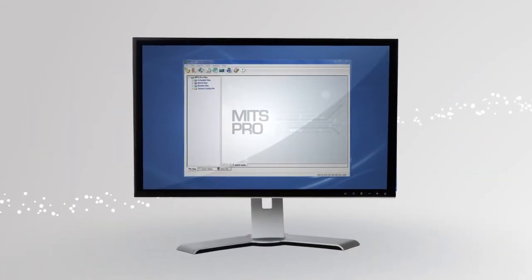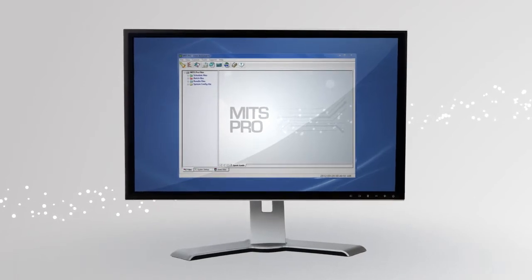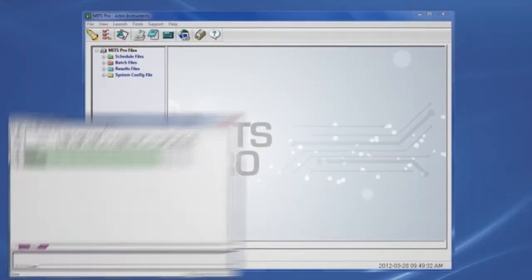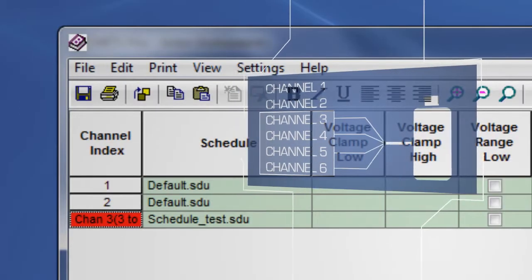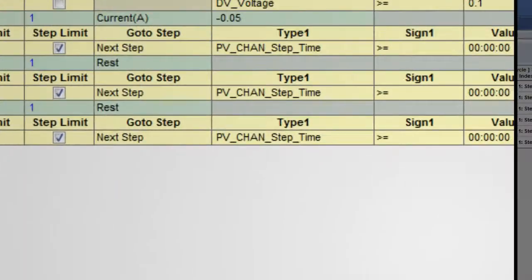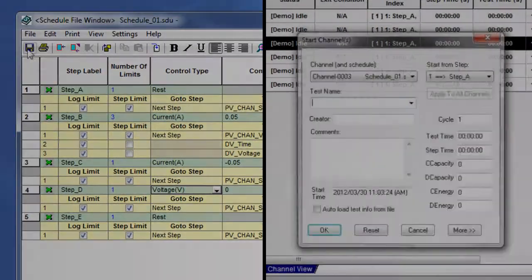Arbin's MITS Pro software is regarded as the most powerful and flexible in the industry. The software makes paralleling channels to increase the current capacity effortless. Creating and starting a new test is a simple and intuitive two-step process.